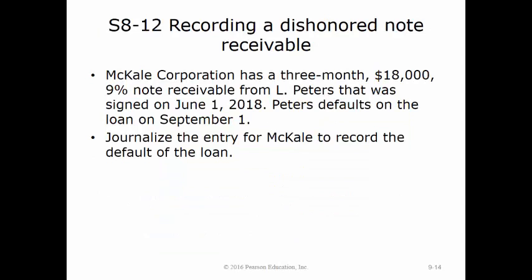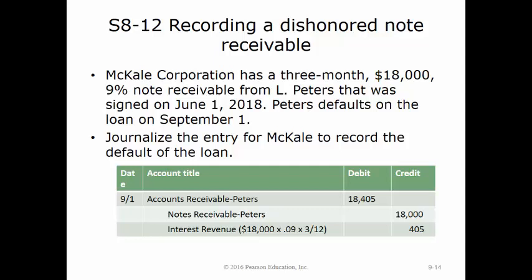This exercise asks us to record a dishonored note receivable. McHale Corporation has a three-month, $18,000, 9% note receivable from L. Peters, signed on June 1, 2018. Peters defaults on the loan on September 1. Interest is calculated as $18,000 × 9% × (3/12) = $405. To record the dishonored note, we debit accounts receivable Peters for $18,405, and credit notes receivable Peters for $18,000 and interest revenue for $405. McHale Corporation will now try to collect the accounts receivable from Peters, or write off the amount if unsuccessful.